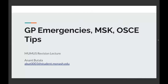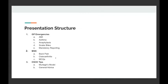So I'm going to be covering GP emergencies, MSK, and OSCE tips. As the OSCEs are pass-fail only, I won't go too much into OSCEs, maybe the last five minutes. I'll focus a lot on MSK because there's quite a few multiple choice questions I can ask on that. For GP emergencies, we'll go through AMI, asthma, anaphylaxis — probably the three big ones — and then snake bites and mandatory reporting. For MSK, we'll do back pain and osteoarthritis in detail, then MCQs on other MSK conditions. And then OSCEs, just the last five minutes, we'll go through Murtagh's model and some general advice.